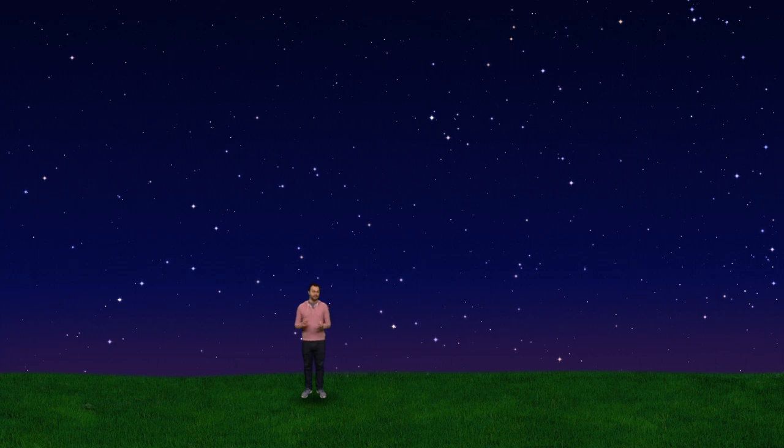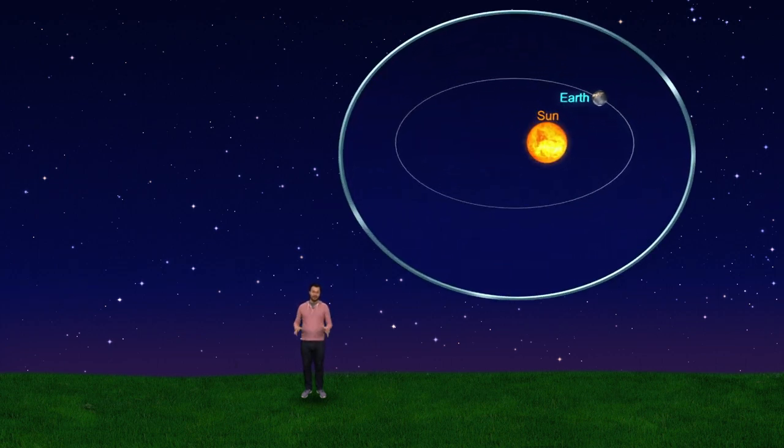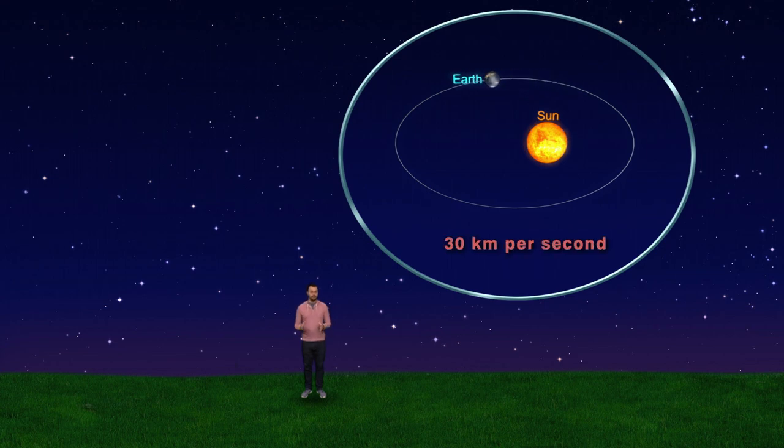The meteors burn up in the atmosphere because of friction. The Earth is moving super fast through space, like 30 kilometers per second or so. When a meteor is floating in space, it hits our literal windshield and the friction of the air causes it to burn up.